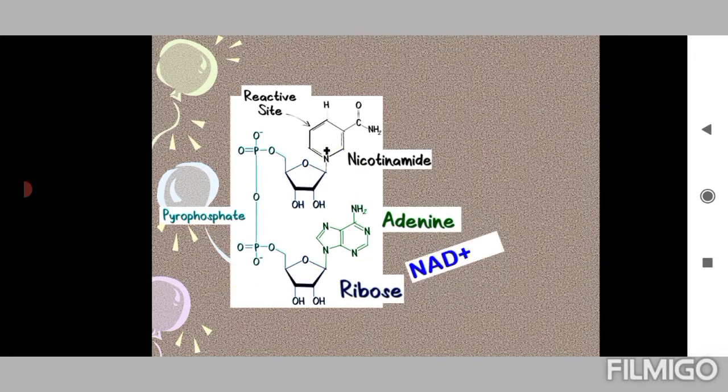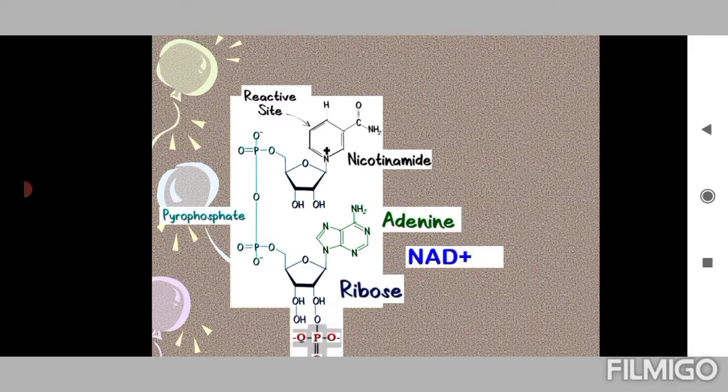And here, when NAD plus has a phosphate group esterified to the second position of one of the ribose - the second position esterified with the phosphate group - then it becomes NADP plus.